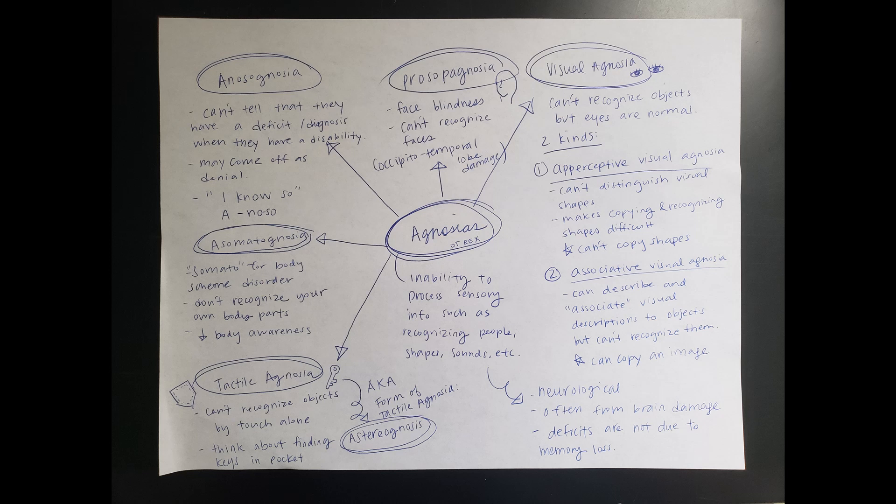Please note that agnosia is neurological and is often something that happens after brain damage. You'll see this a lot with the stroke population as well as any brain-related injuries, and these deficits don't have anything to do with memory loss. They might seem like it, but it is neurological — keep that in mind while we work through some of these examples.